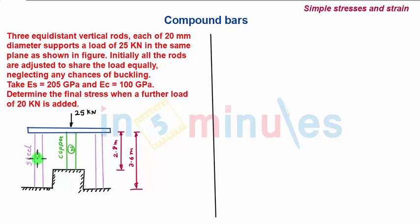So we can see in this figure we have the steel and copper rod system on which initially there is a load of 25kN. The length of steel and copper rod is different.